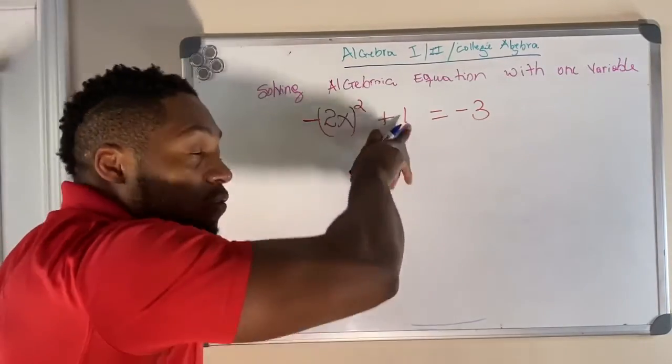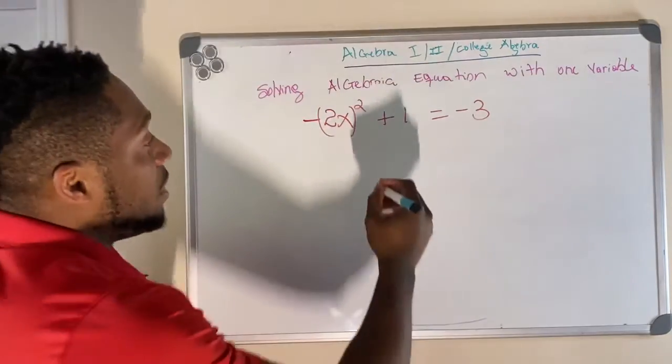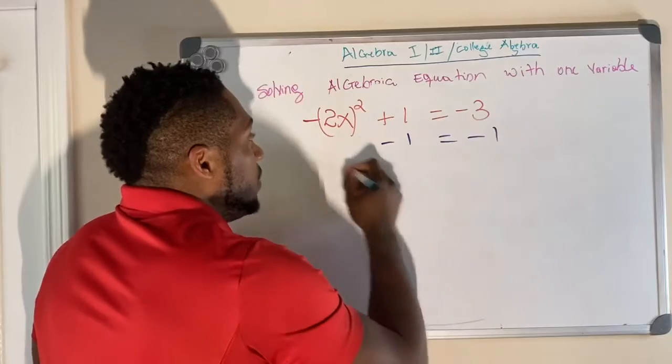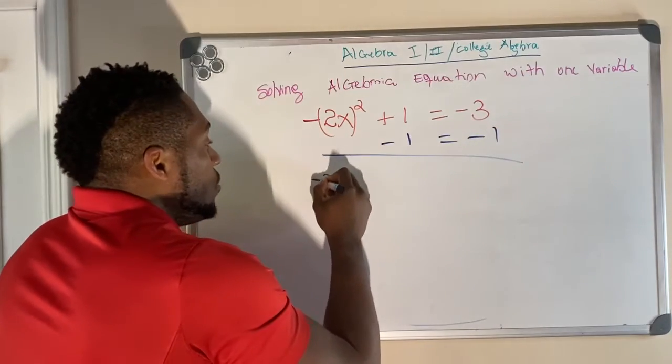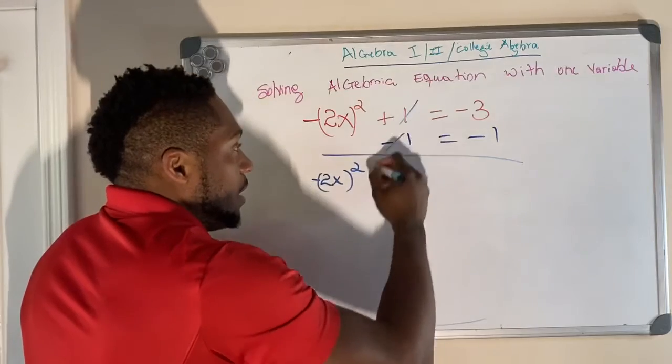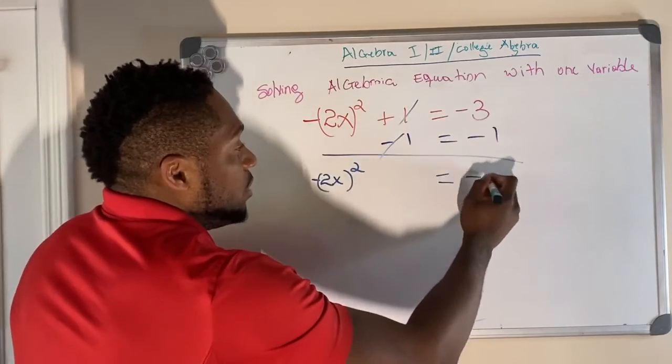There's two ways to do this. You can say, I'm moving the 1 from this side to this side, which makes it a negative 1. Or you can say, as we commonly say, let's add negative 1 to both sides. So -2x², that negative 1 plus 1 is gone. So you have -3 minus 1, which is -4.